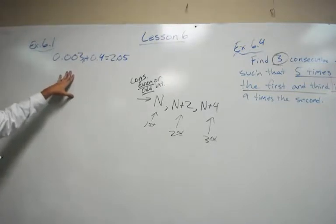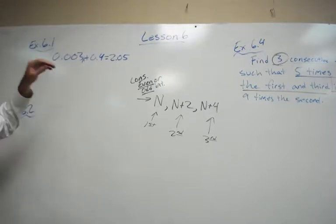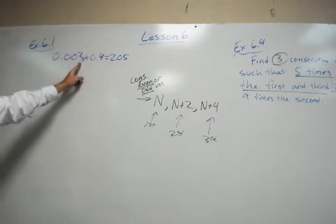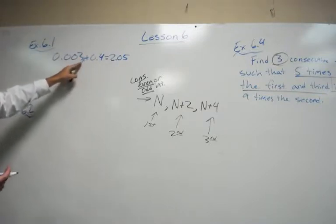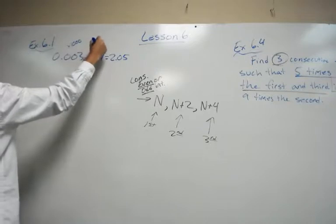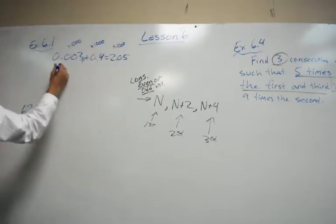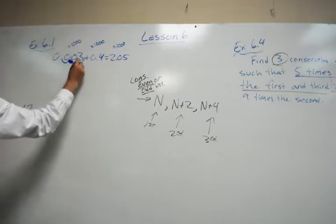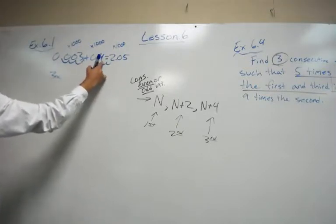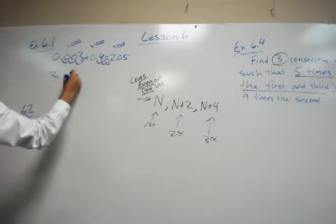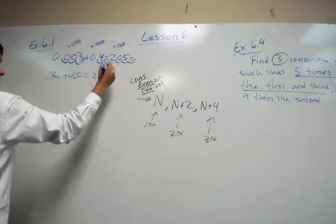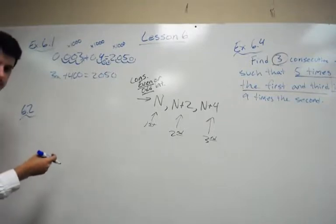This three is in the thousandths spot, four is in the tenths, five hundredths — but since three is in the thousandths spot, we can get rid of all these decimals by multiplying everything by 1000. You can think of it as moving the decimal three times. Do it to all terms: this becomes 3x, plus 400, plus 200 equals 2050. Now we have an equation that's a lot easier to solve.